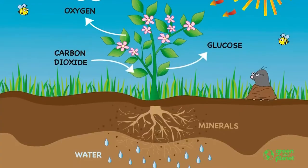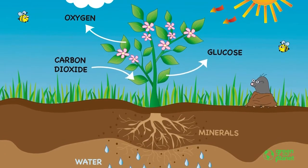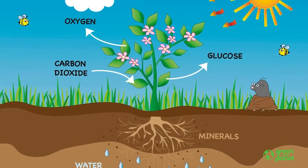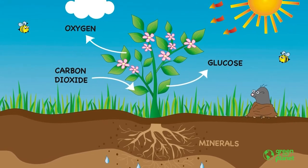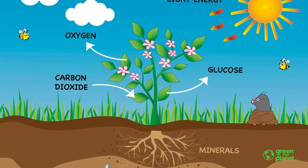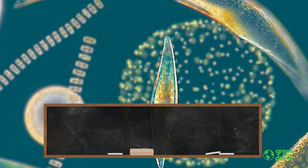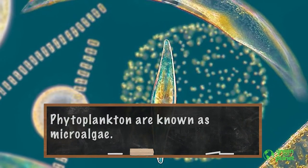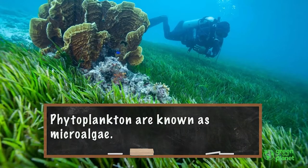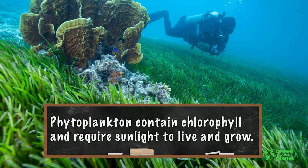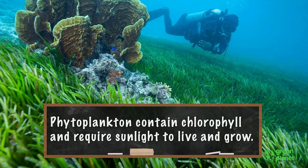While a good bit of the oxygen that we breathe is created by plants here on land, it's interesting to note that a large percentage of the oxygen is also created by phytoplankton, which are tiny algae that float around in the ocean, and also by marine plants, which are plants living in the ocean.